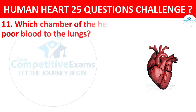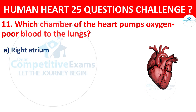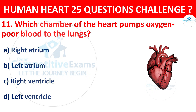Question number 11. Which chamber of the heart pumps oxygen-poor blood to the lungs? Options: Right atrium, Left atrium, Right ventricle, or Left ventricle. Correct answer is C, that is Right ventricle.